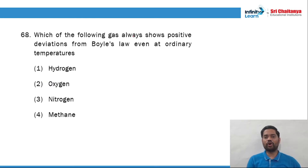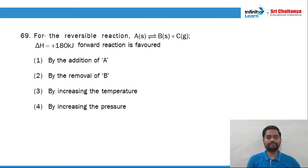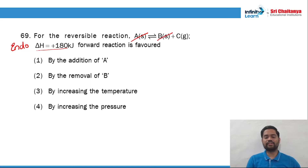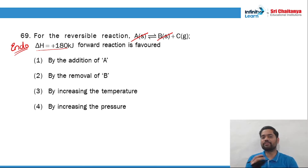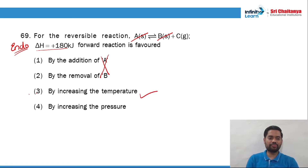Question 68: which one of the following always shows positive deviation from Boyle's law? There are only 2 gases — hydrogen and helium. So option number 1 should be the right answer. Question 69: for a reversible reaction, ΔH is positive, meaning it is endothermic. Since it is endothermic, increasing temperature favors the forward reaction. Option number 3 is the right answer.